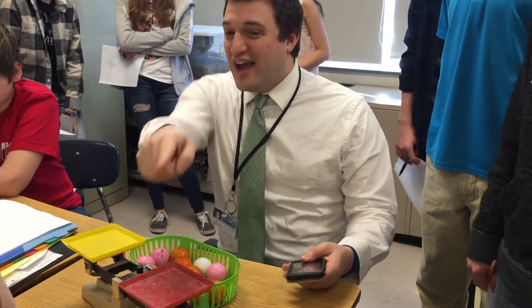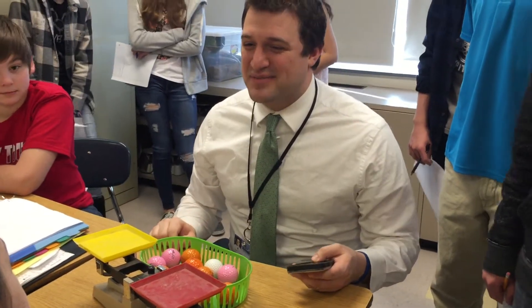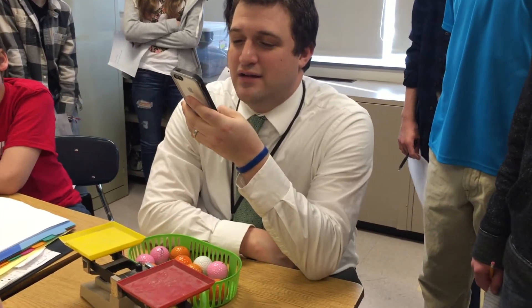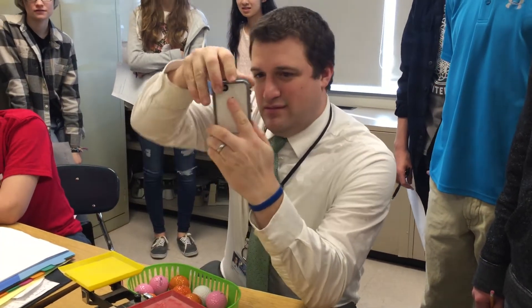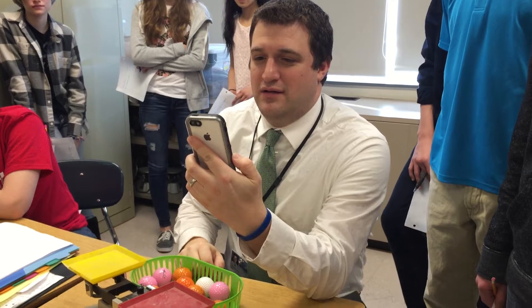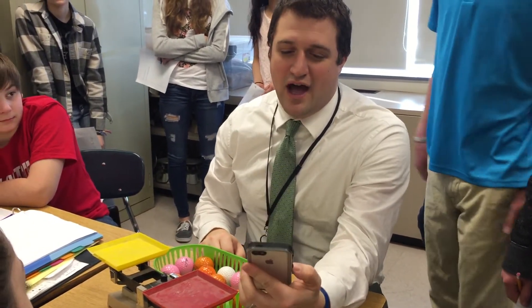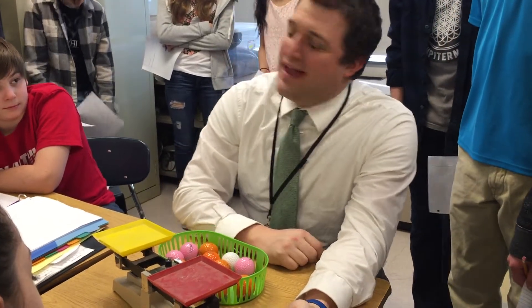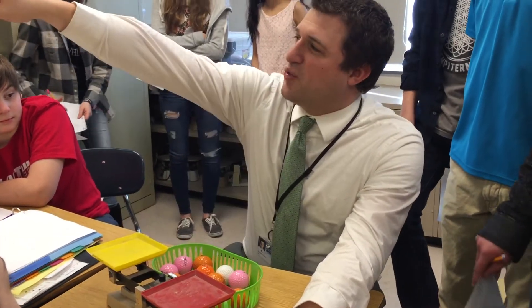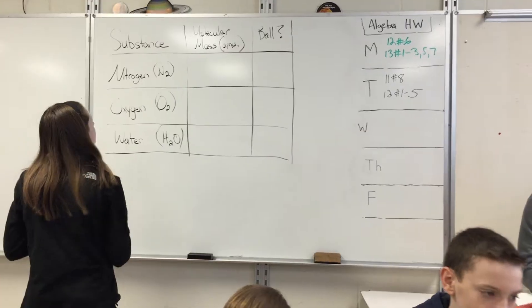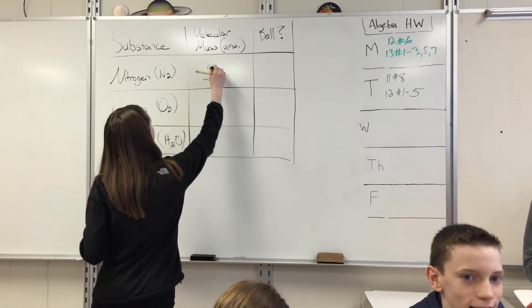Each of those samples of air — what are some things that are in air? Nitrogen is a good example of something that's in air. What is the molecular mass of nitrogen? Siri tells me that the atomic, or molecular mass of nitrogen is about 28. So we're going to put 28 on our chart there for the molecular mass of nitrogen — AMU, atomic mass units.